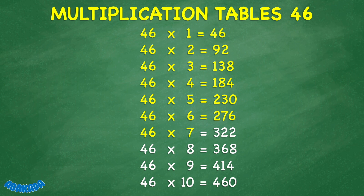46 times 7 equals 322. 46 times 8 equals 368. 46 times 9 equals 414. 46 times 10 equals 460.